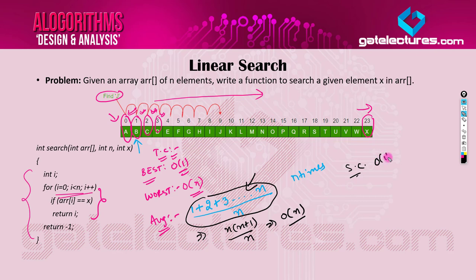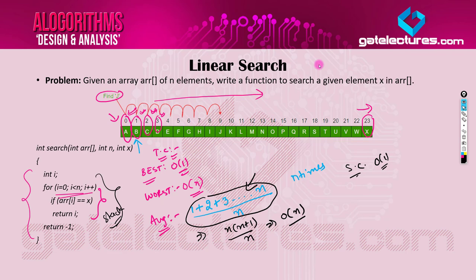For space complexity, linear search takes O(1) space because we are not using any extra space. This is an iterative, non-recursive program, so no stack space is used. Linear search is one of the simplest algorithms in the subject of Design and Analysis of Algorithms. Next, let's look at the binary search algorithm.